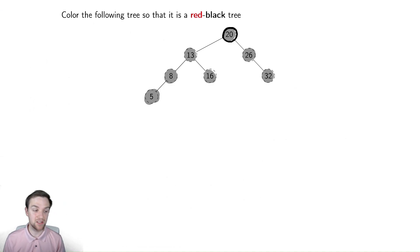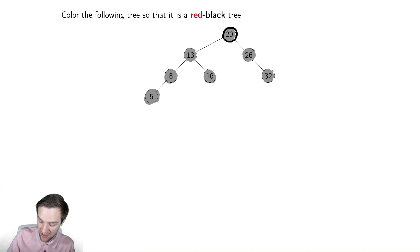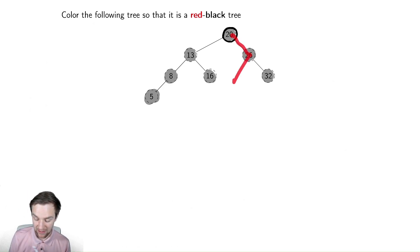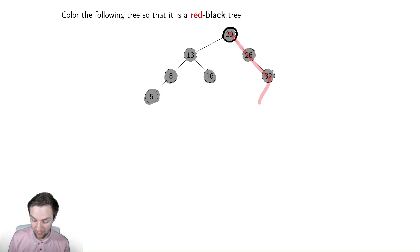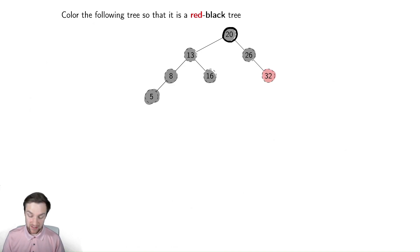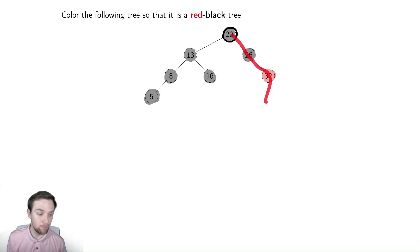Let's notice what is the shortest path from the root to a leaf. The shortest path goes 20, 26, nil — so that path can have at most three black nodes: the root, 26, and then the leaf. Therefore, this path 20, 26, 30, then the leaf must have the same number of black nodes. So I actually can't color 32 black — I must color it red. Now the path 20, 26, nil and the path 20, 26, 32, nil both have two black nodes in them.